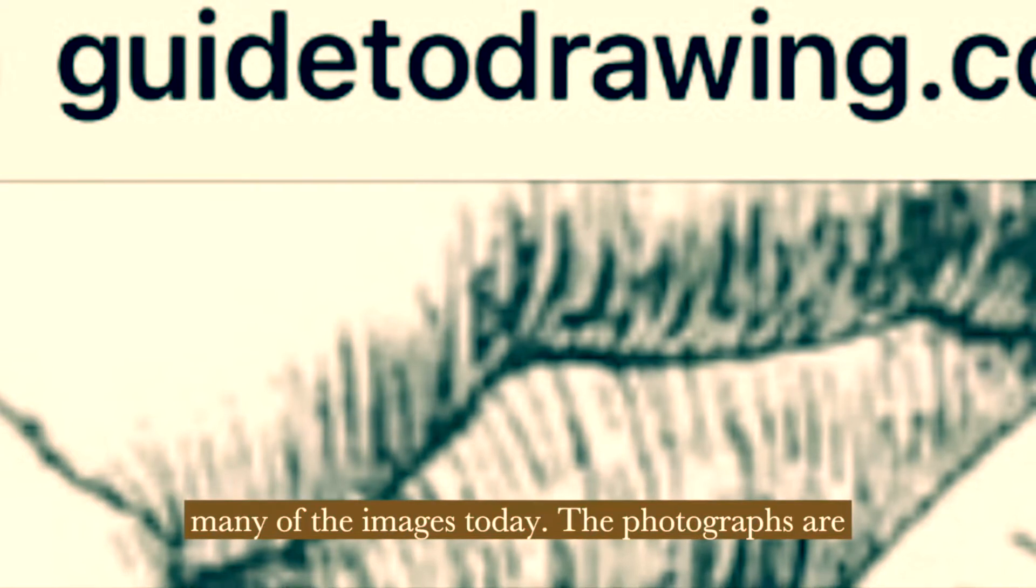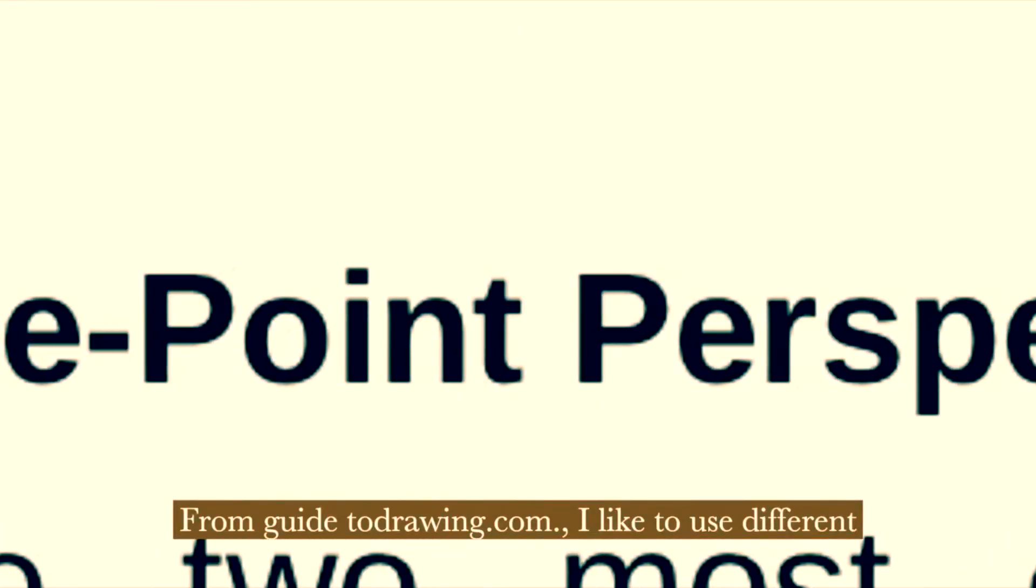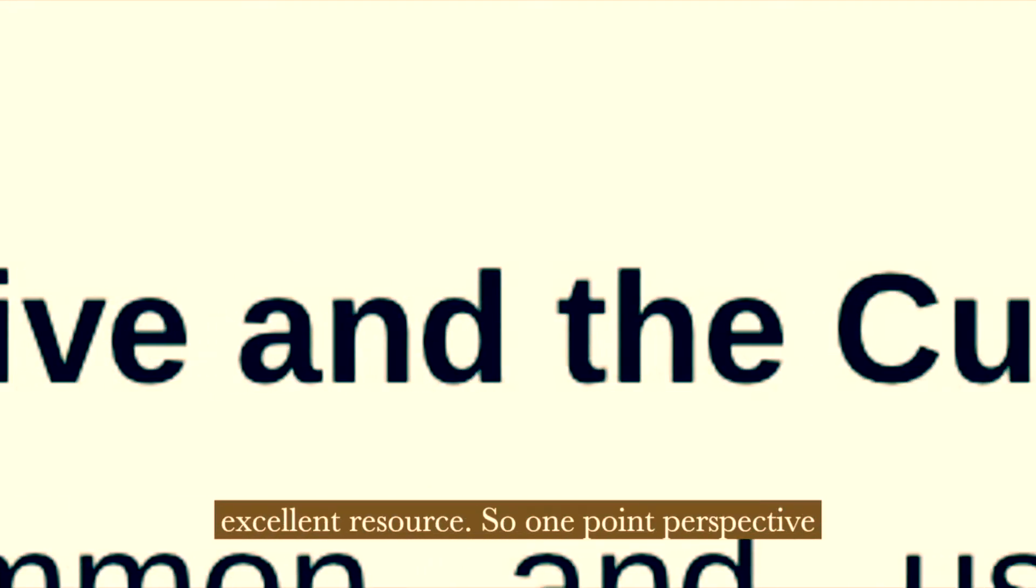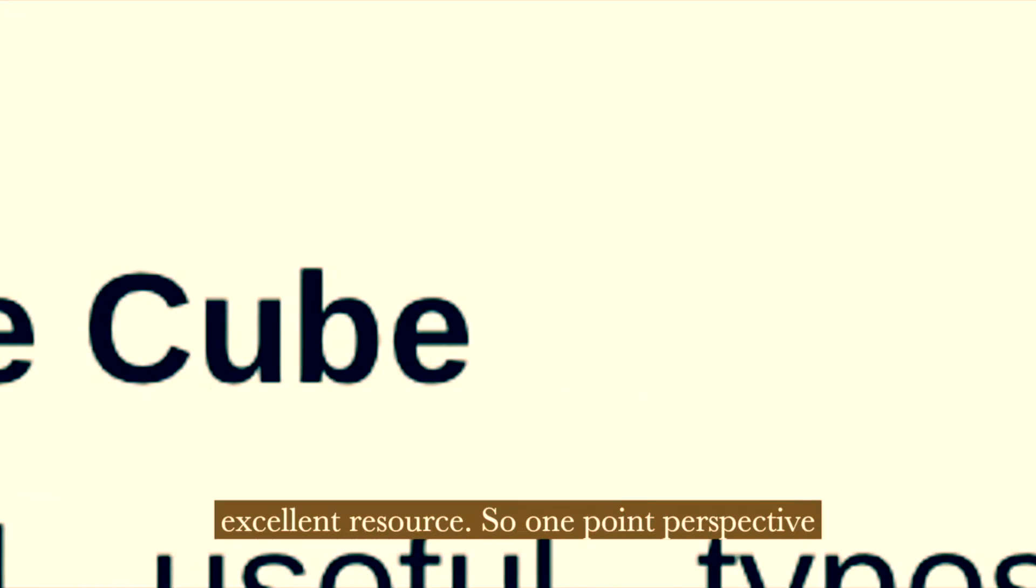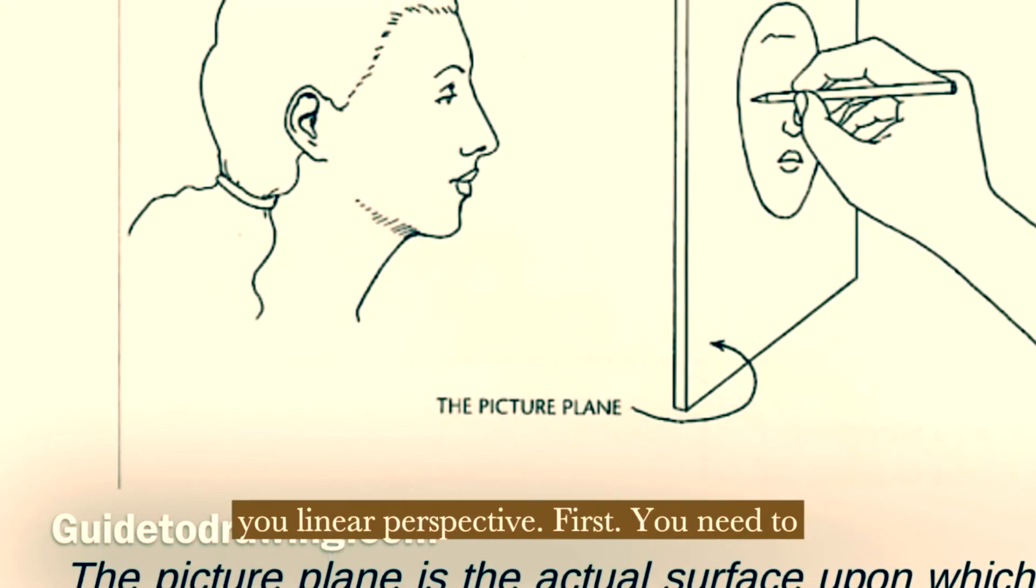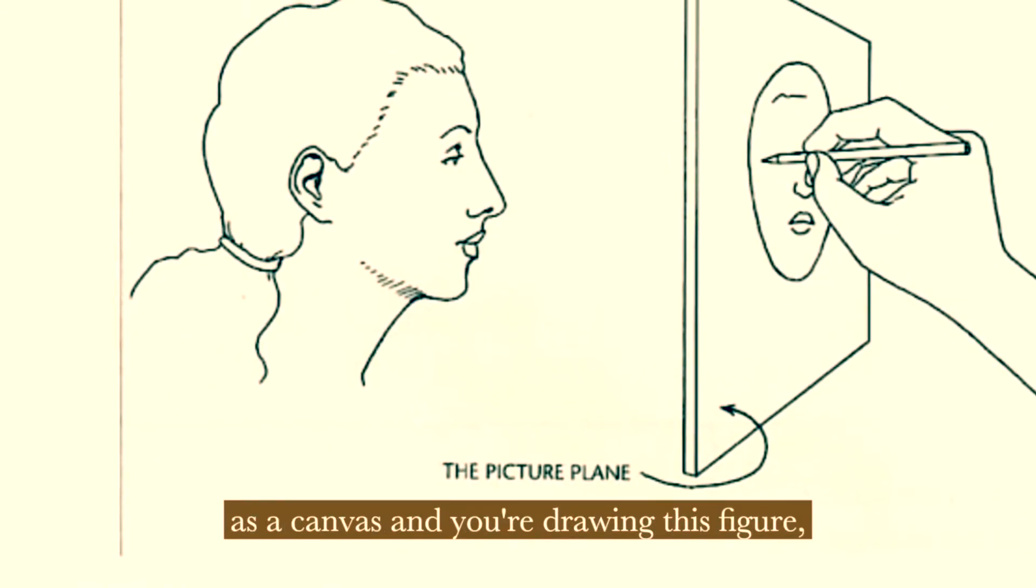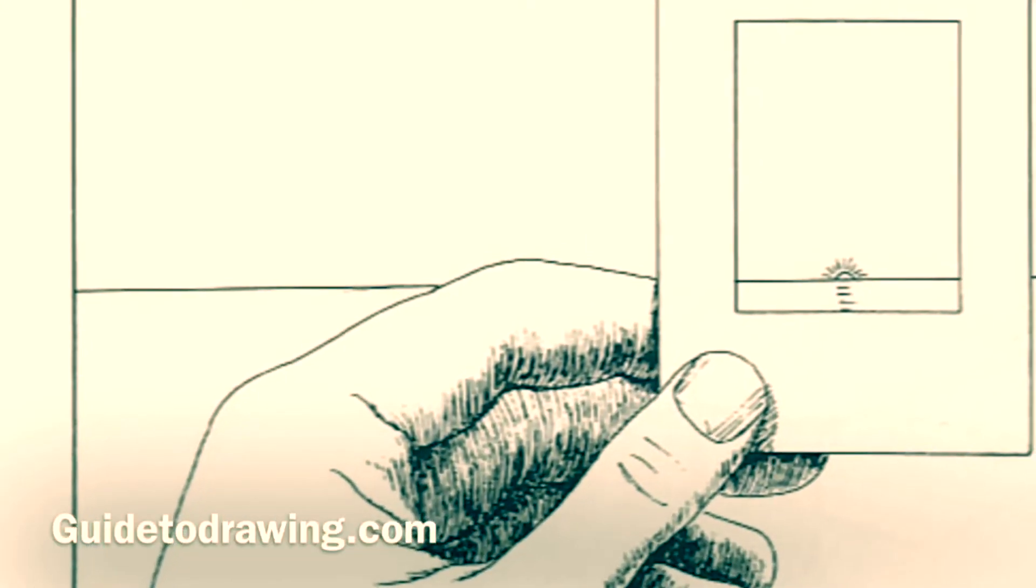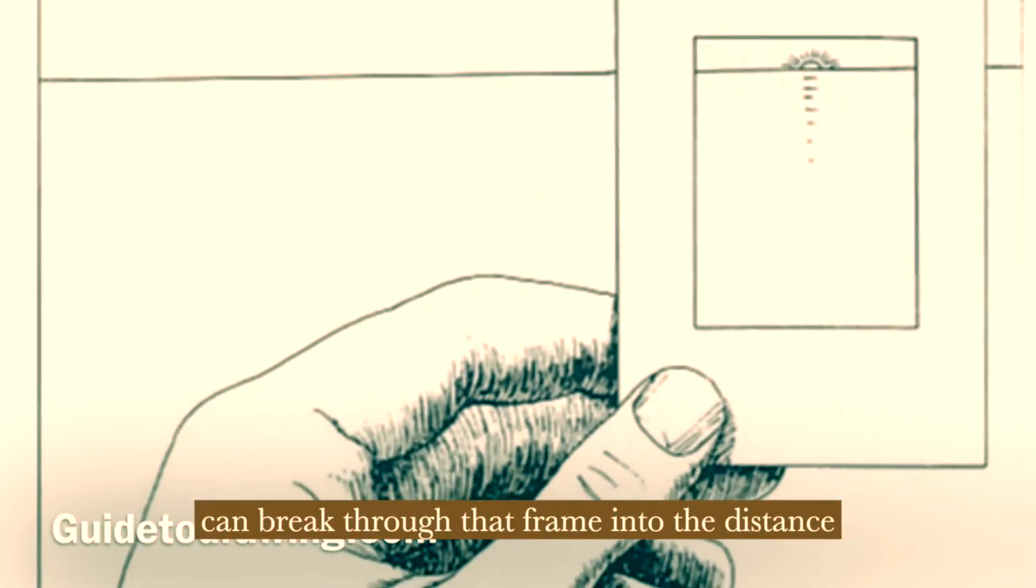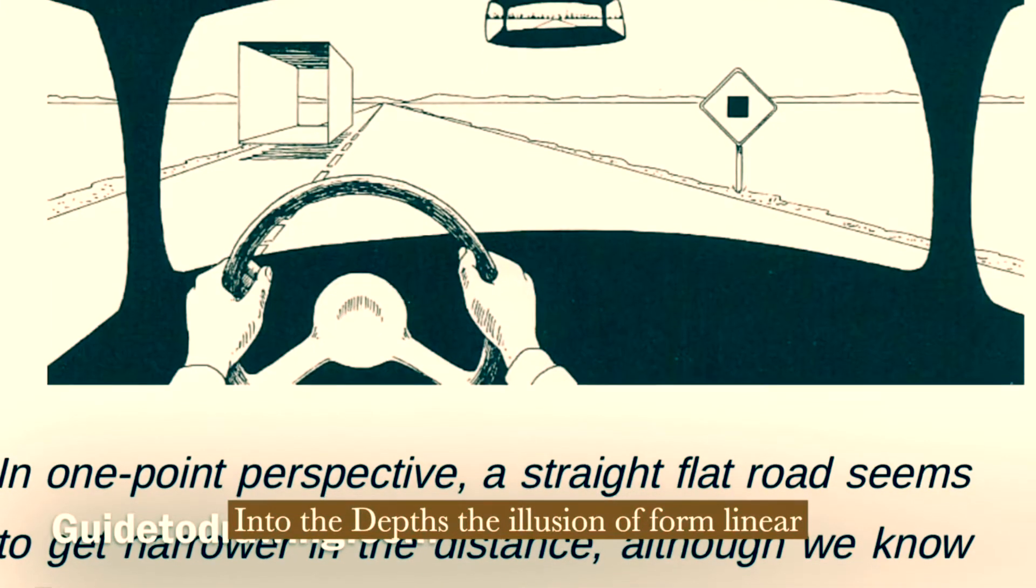Many of the images today, the photographs are from guide to drawing.com. I like to use different resources and share them with you. I think one-point perspective and the cube, what a great project this is to teach you linear perspective. First, you need to know about the picture plane. Imagine this as a canvas and you're drawing this figure. You're trying to make the illusion that you can break through that frame into the distance, into the depth, the illusion of form.